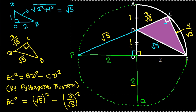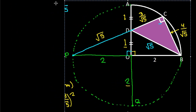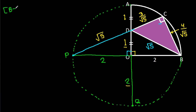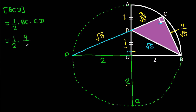Now, the area of triangle BCD equals one-half times base BC times height CD, which is one-half times 4 over root 5 times 3 over root 5. That gives 6 over 5. So the area is 6 over 5.